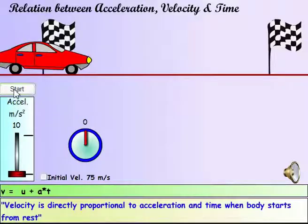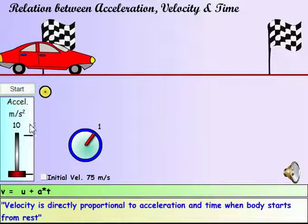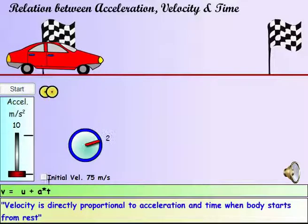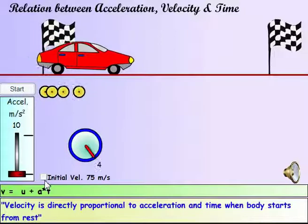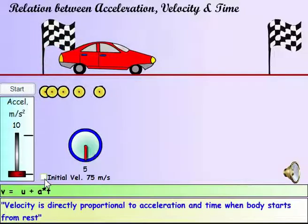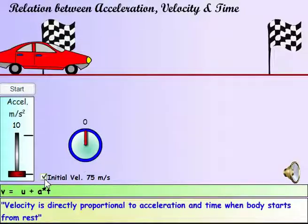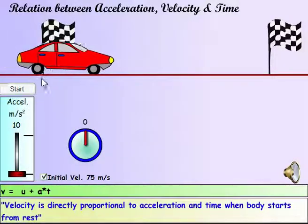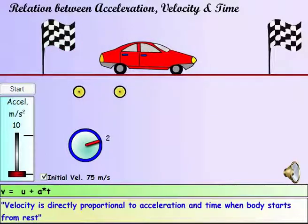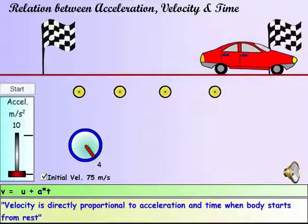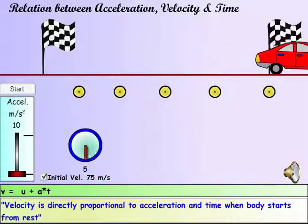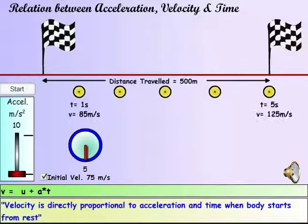The final velocity is the initial velocity plus the product of acceleration and time.